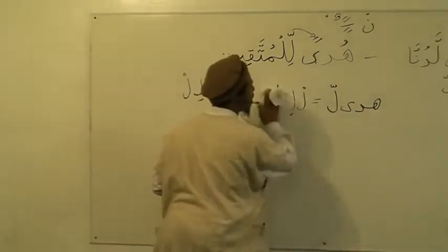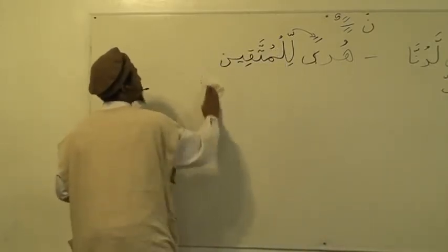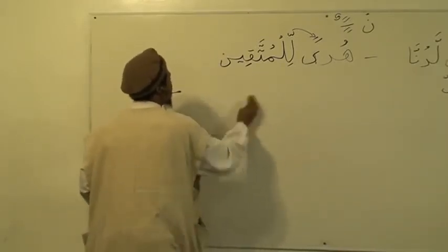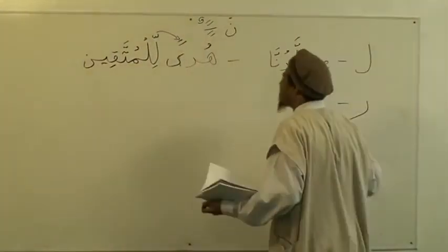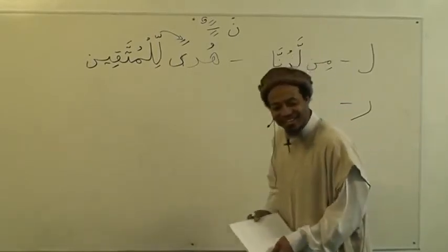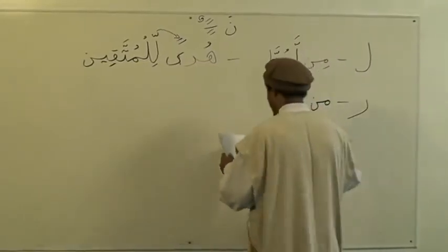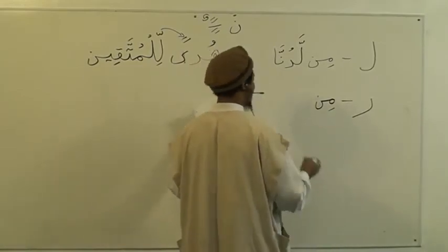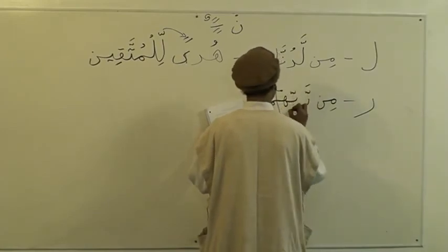The next topic is Lam and Ra. Just two letters today and we're done. The second letter — come on, guys — is Ra. So we say 'Rabbihim.' Rabbihim.